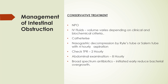Coming on to the management of intestinal obstruction, we generally start with conservative treatment by keeping the patient nil per oral. We give IV fluids according to the clinical and biochemical criteria. We catheterize the patient and perform nasogastric decompression with the help of a Ryle's tube or a Salem sump with 4-hourly aspiration. We check temperature, pulse, and respiratory rate 2-hourly.